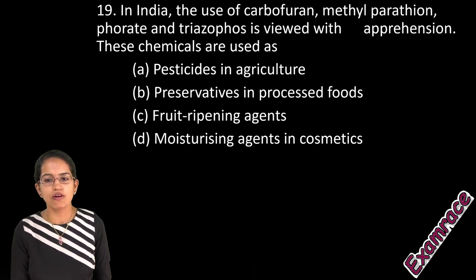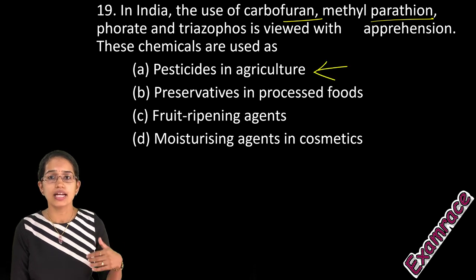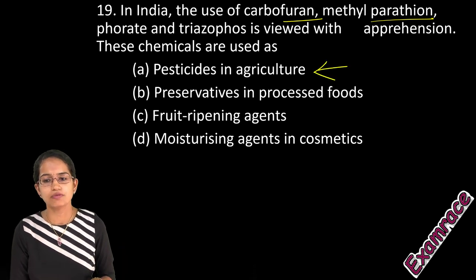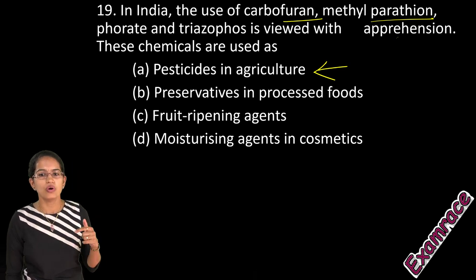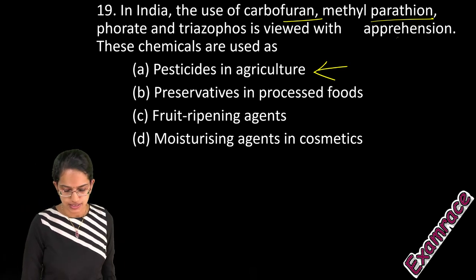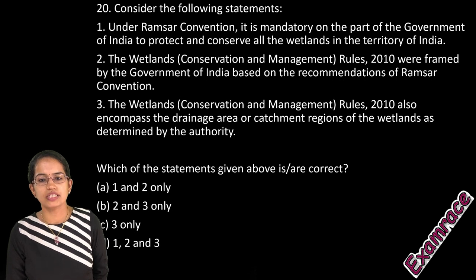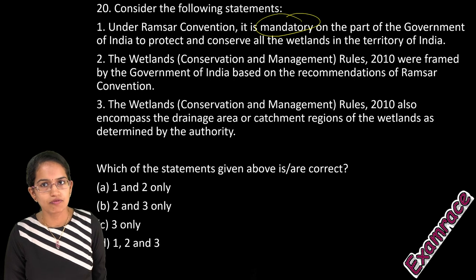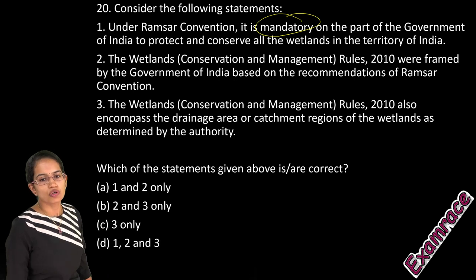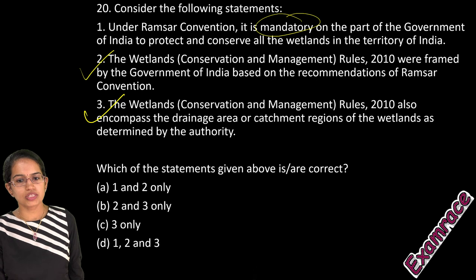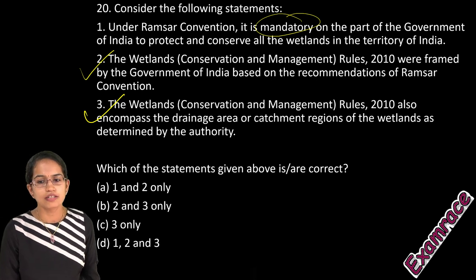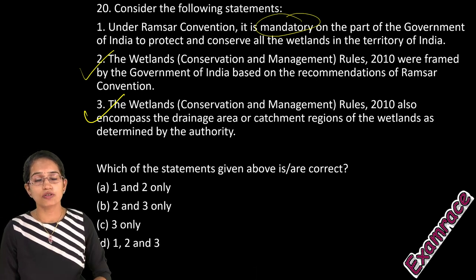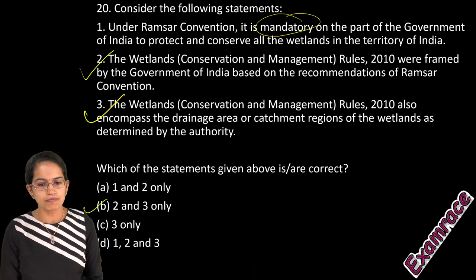In India, the use of Carbofuran and Methylparathion has been in agriculture as pesticides, but they are now viewed with apprehension, so pesticides in agriculture is the right option. The Ramsar Convention is not mandatory; however, the rules are framed by the Government of India's Ministry of Environment and Forest Department. Options two and three are correct, though the Wetland Rules 2010 do not cover coastal wetlands and coastal paddy fields.